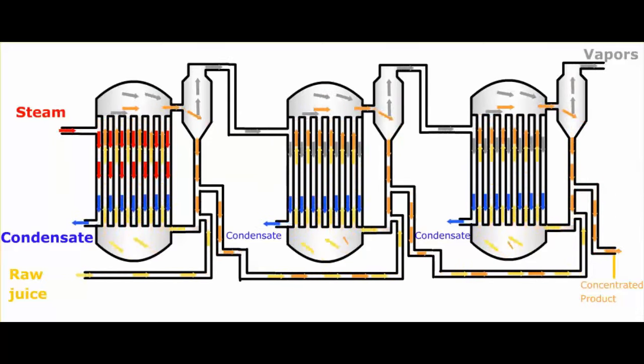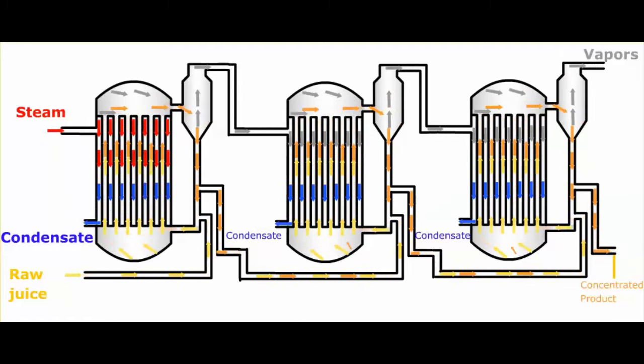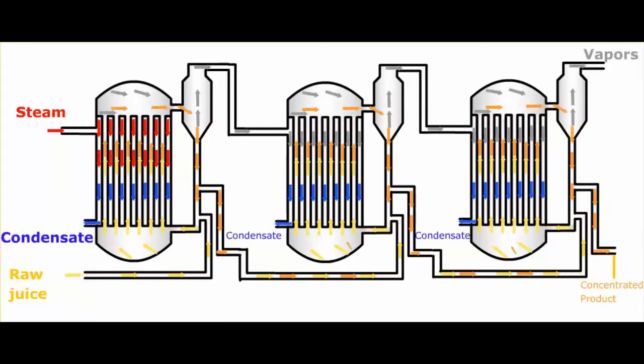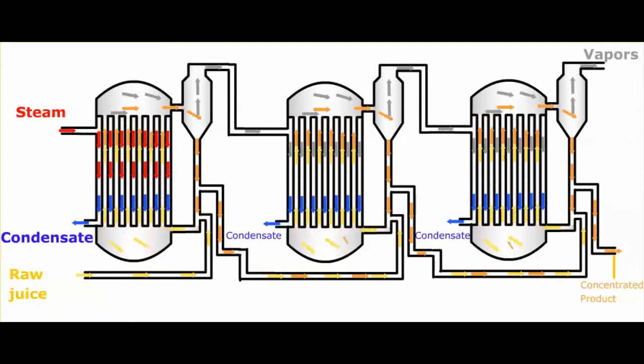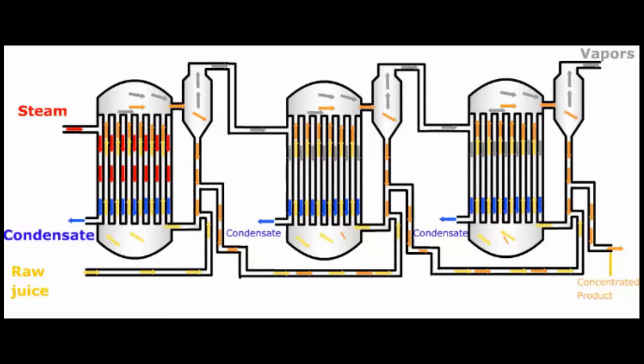So in a triple effect evaporator, steam comes in and enters only the first effect, and then for the second and third effect heating is done by the vapors being discharged from the previous effects. The vacuum inside these chambers will be maintained at appropriate levels so that the liquid streams in those effects can appropriately boil and discharge vapors. Note that the boiling temperature in each of these effects is different, and that boiling temperature is maintained by using different levels of vacuum in each of these effects.